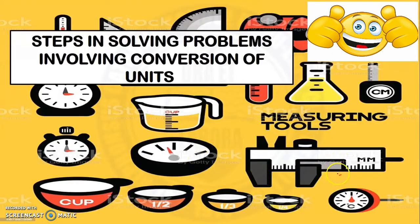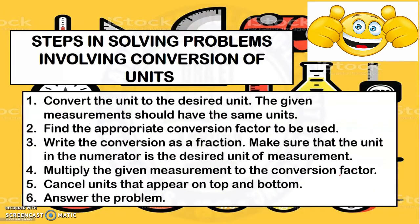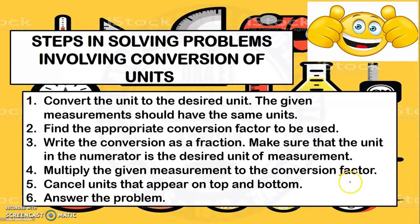These are the steps in solving problems involving conversion of units. Step 1: Convert the unit to the desired unit. The given measurements should have the same units. Step 2: Find the appropriate conversion factor to be used. Step 3: Write the conversion as a fraction. Make sure that the unit in the numerator is the desired unit of measurement.